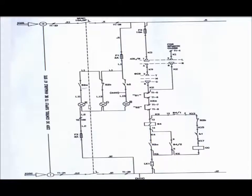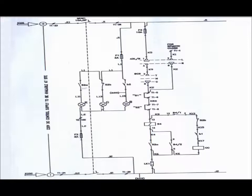There are three indication lamps: red, green, and blue. Red is the indication for circuit breaker ON condition, green is the indication for circuit breaker OFF condition, and blue is the indication for circuit breaker spring charge condition.